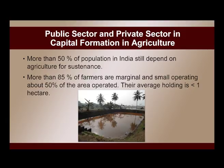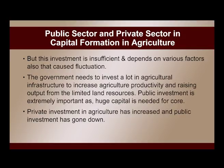More than 50 percent of India's population still depends on agriculture for sustenance. More than 85 percent of farmers are marginal and small, operating about 50 percent of the area, with average holdings of less than one hectare. They are poor and cannot afford much saving to invest in agriculture. Farmers with larger holdings reaped more benefit from modern agricultural technology and were able to save and invest more, but this investment remains insufficient.